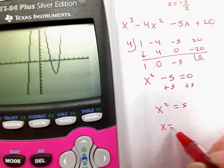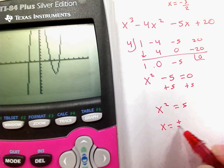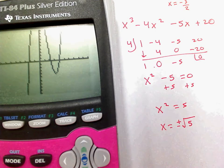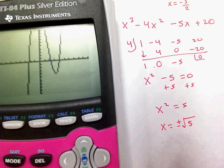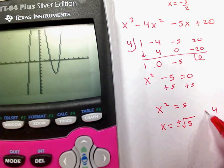Okay, well, then I'm going to add 5. And then I'm going to take the square root. And you've got to remember that when you take the square root, you have two answers, plus and minus the square root of 5.